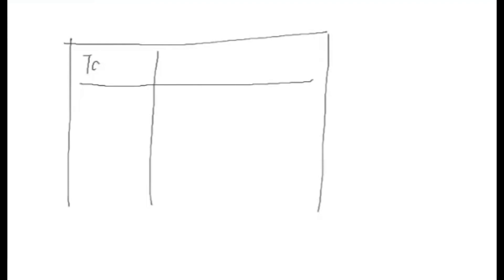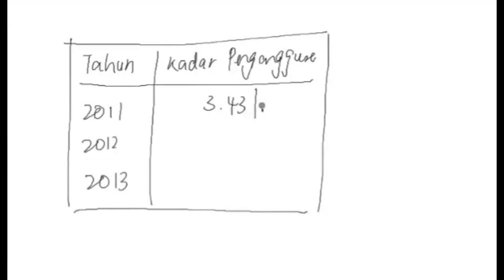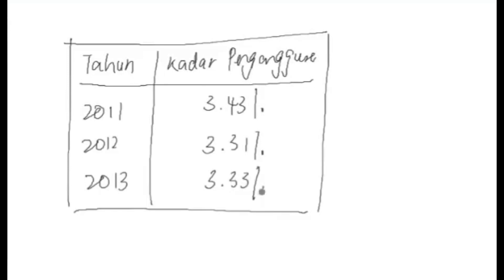Jadual yang disediakan lebih kurang sama dengan tadi, sini tahun, tapi kat sini bukan lagi jumlah penganggur - dia sudah jadi kadar pengangguran. Jawapan bagi kadar pengangguran bagi tahun 2012 adalah 3.31 peratus, kemudian tahun 2013 adalah 3.33 peratus. Ingat, kena sebut peratus. Inilah jawapan yang betul untuk hitung kadar pengangguran.